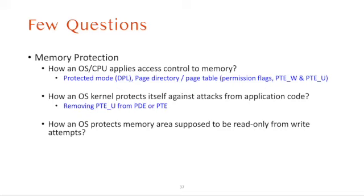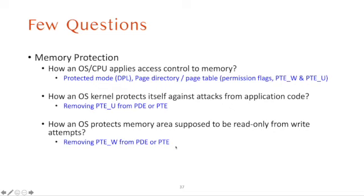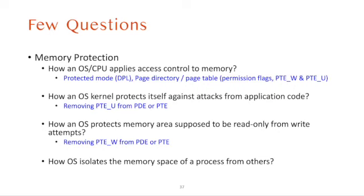Next: how does an OS protect a memory area that is supposed to be read-only from write attempts? This is easy — by controlling memory permission flags in page table entries. By removing PTE_W, we can make memory pages read-only. And how does an OS isolate the memory space of one process from others? This is related to the protection goal of virtual memory: by having a separated page directory and page tables, we can give each process an isolated virtual memory space. This is done by creating a new page directory and page tables for each new process.